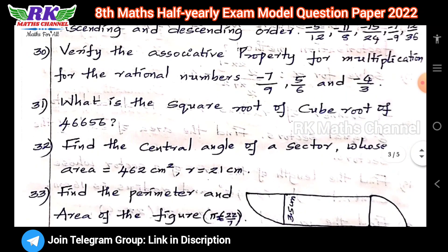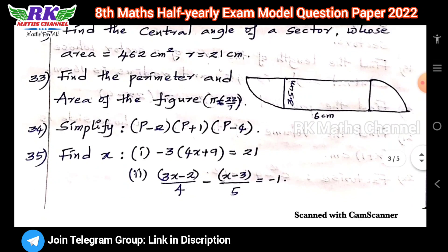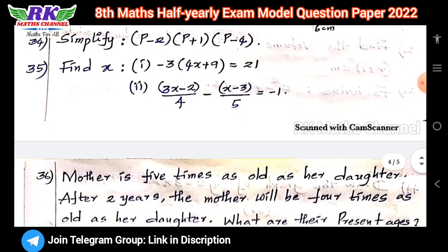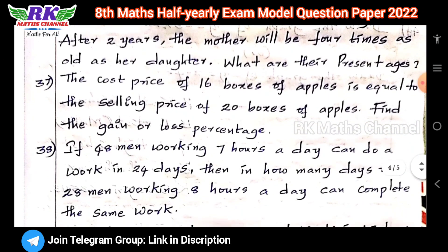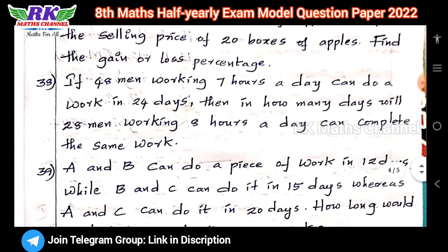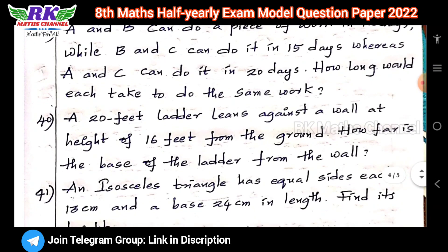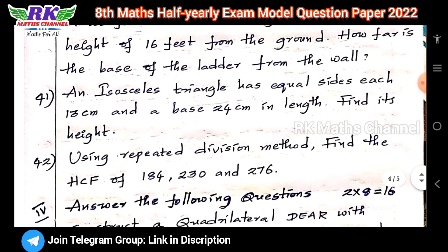The 5-mark questions by lesson: first lesson 3 questions, second lesson 2 questions, third lesson 3 questions, fourth lesson 3 questions, fifth lesson 2 questions, and seventh lesson 1 question — total 14 questions, answer 10 questions.